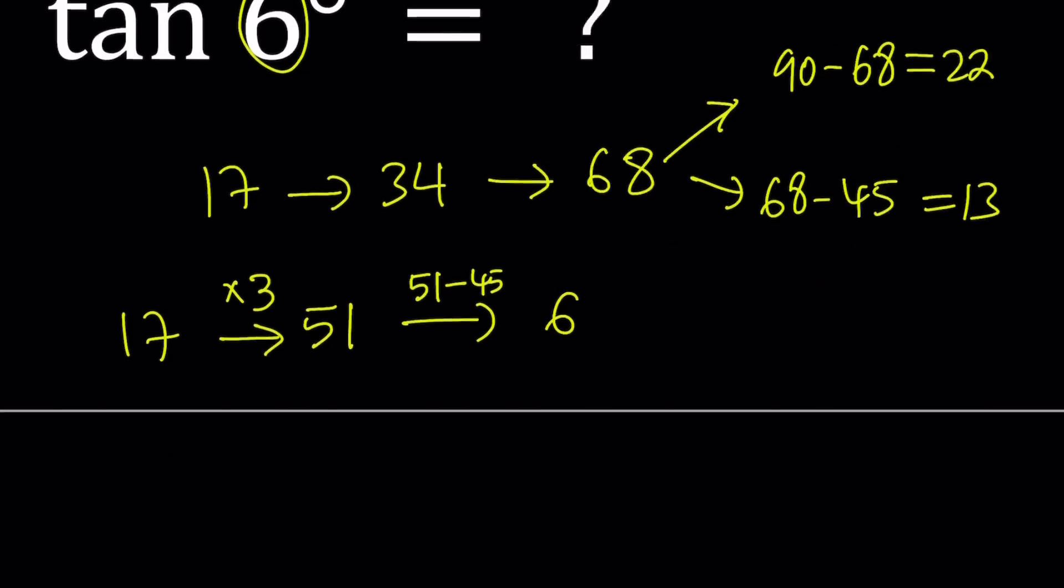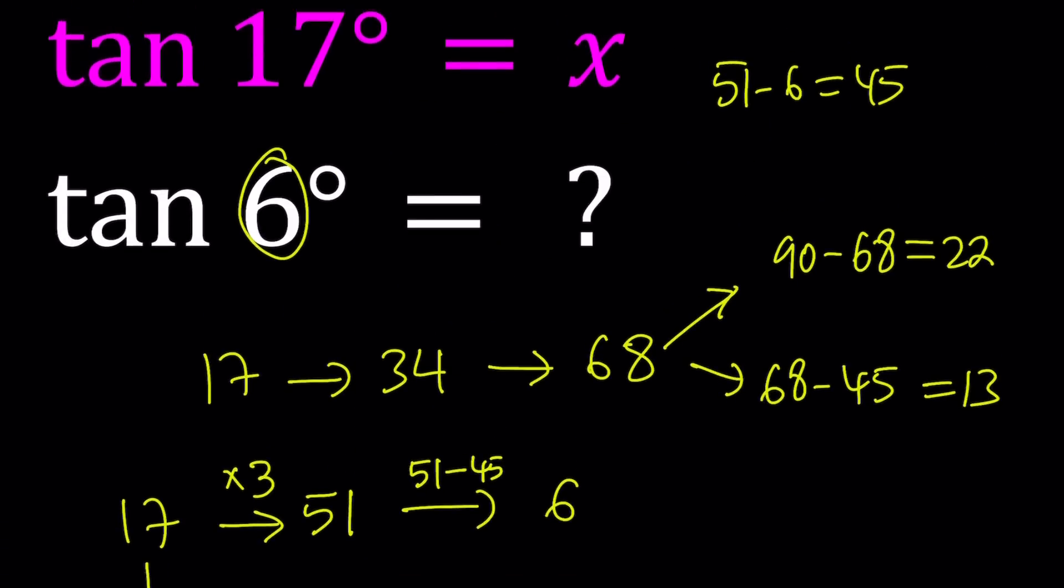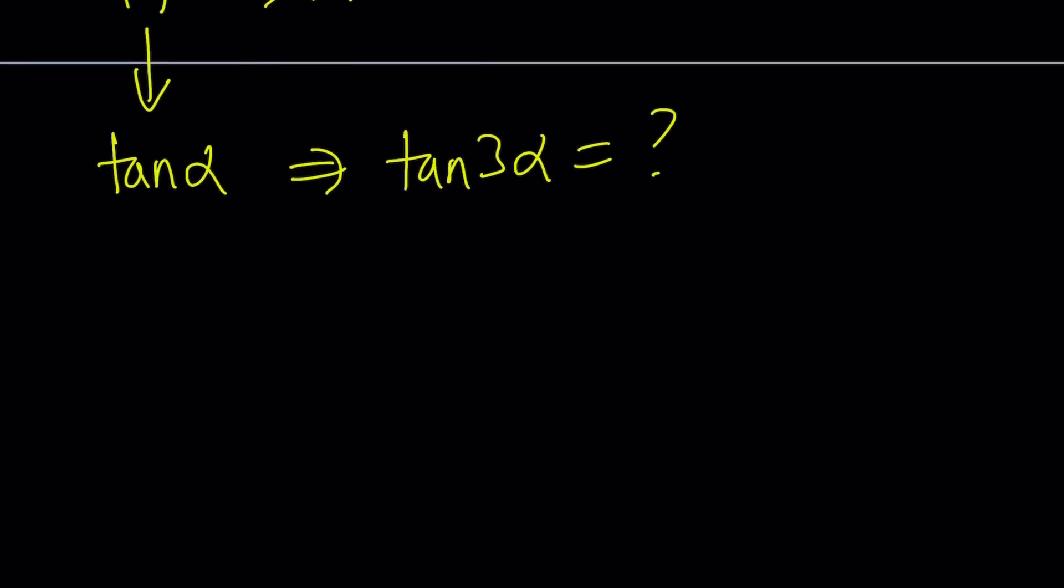So now here's what we have. I have tangent 17 is equal to x. So I need to triple it. In other words, if I have tangent x or, okay, I keep using x for the wrong reason. If I have tangent alpha, I do need tangent 3 alpha. So that's called the triple angle. How do you go to tangent 3 alpha? From tangent alpha, I'm going to show you two methods. So those are going to be my two methods for solving this problem.